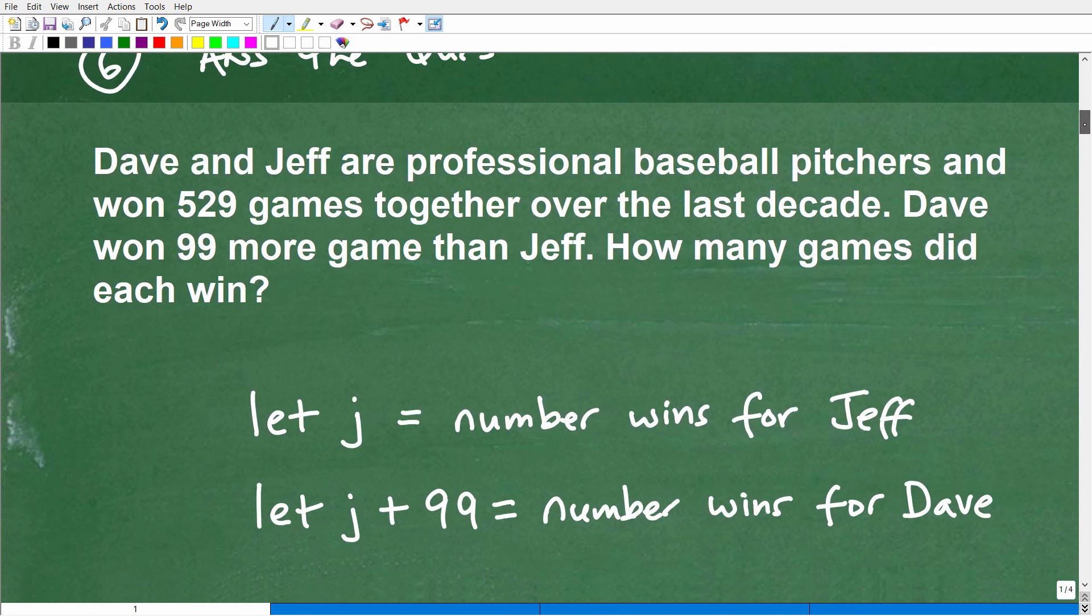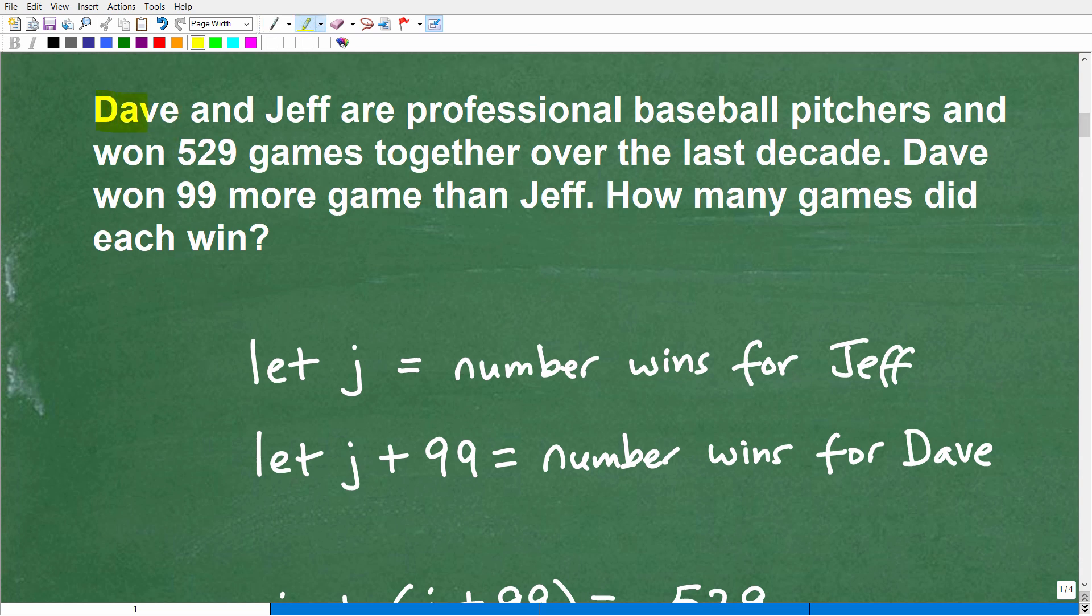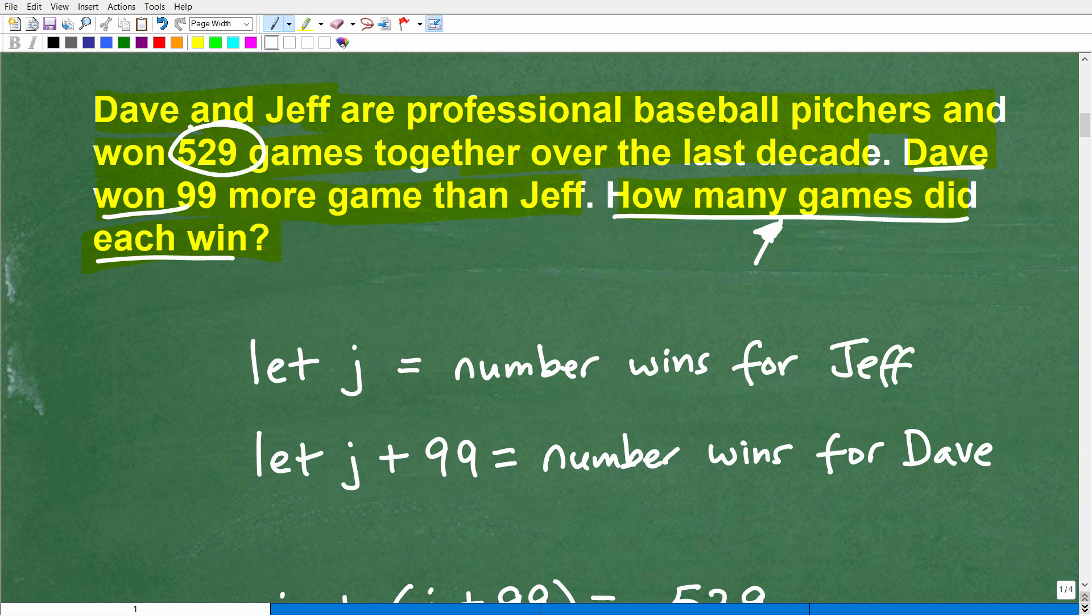Okay, so I'm going to show you my solution. So if you don't want to see the solution just yet, go and pause the video, but let's get to it. So here we go. So I'm going to read it again. So we have Dave and Jeff, the professional baseball pitchers, and they won 529 games together. So obviously this is information I will be using in the problem. 529 games together over the last decade. So Dave won 99 more games than Jeff. How many games did each win? So I got to answer the final question. My answer has got to be Dave won this many games and Jeff won this many games.